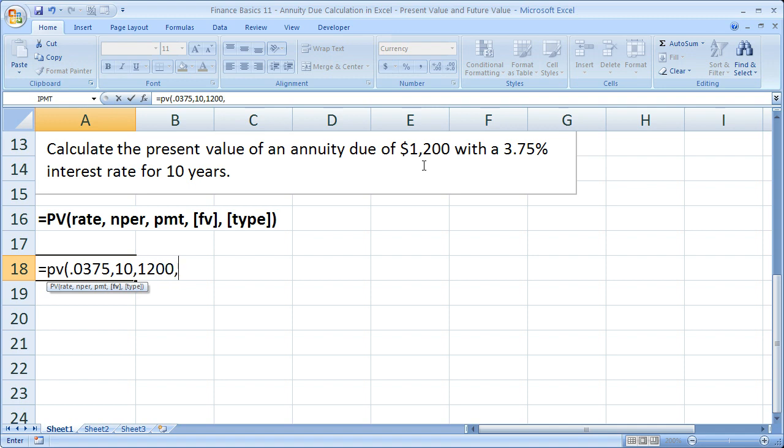Now comma, our future value. Well, we don't have anything to put for that. For this particular problem, just put a comma. All that says is that you don't have anything to put in there. It's an optional argument anyway, so it's okay.